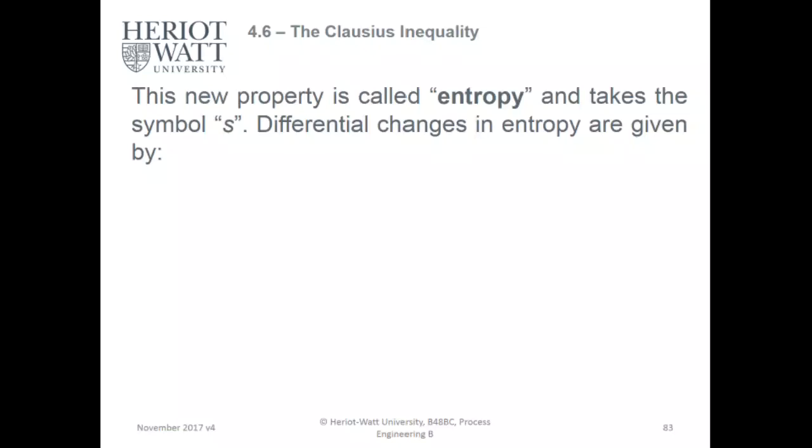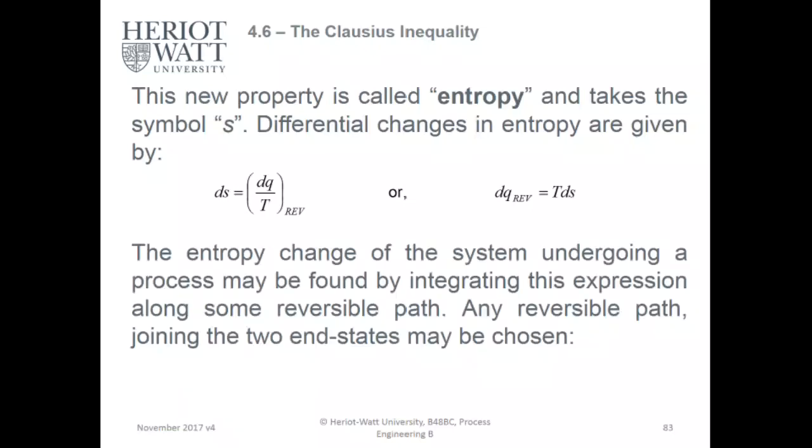This new property is called entropy, which we'll cover in the next lecture, topic 5, and takes the symbol S. Differential changes in entropy are given by DS equals DQ over T reversible, or DQ reversible equals TDS. Entropy change of a system undergoing a process may be found by integrating this expression along some reversible path. The change in entropy is between two points with respect to the change in heat over temperature.